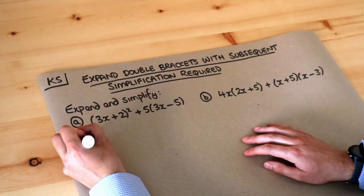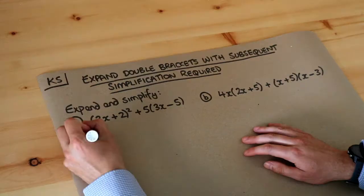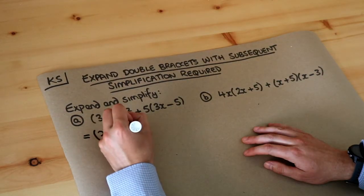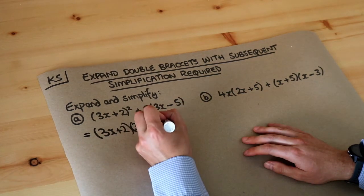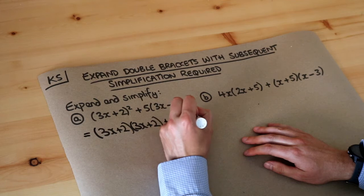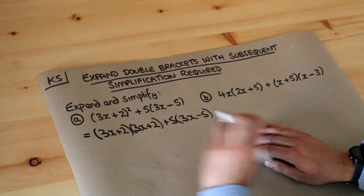So let's expand out the 3x plus 2 squared. Now remember when something is squared it means you times it by itself. So 3x plus 2 multiplied by itself 3x plus 2. Let's just write this again and we expand out each of the brackets. We've got a double bracket here and a single bracket expansion.